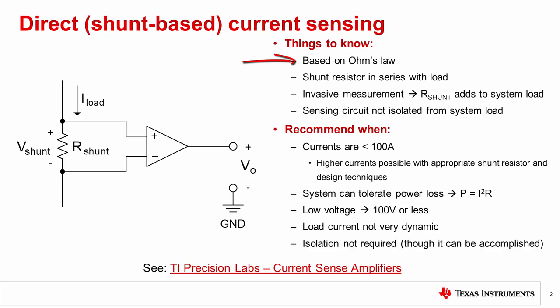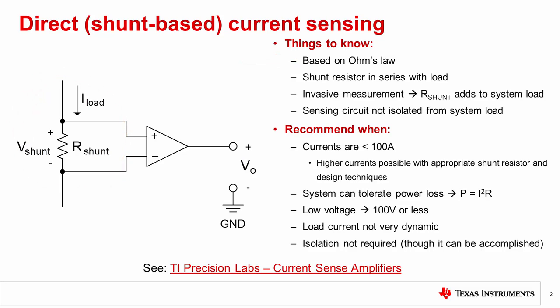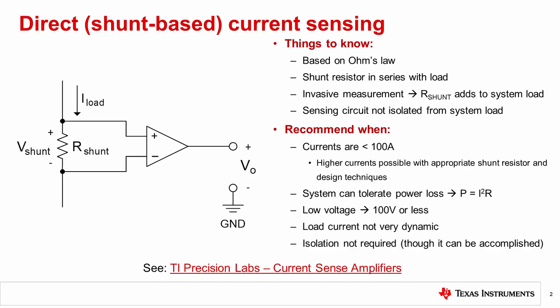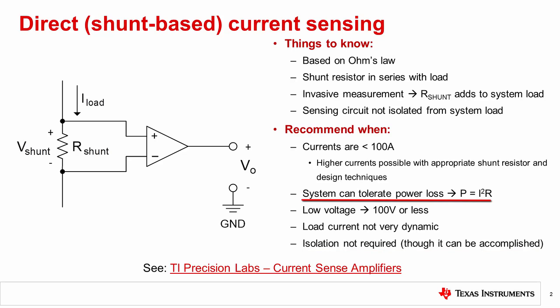Direct or shunt-based current sensing is based on Ohm's Law. By placing a shunt resistor in series with the system load, a voltage is generated across the shunt resistor that is proportional to the system load current. The voltage across the shunt can be measured by differential amplifiers, such as current sense amplifiers, operational amplifiers, difference amplifiers, or instrumentation amplifiers. This method is an invasive measurement of the current, since the shunt resistor and sensing circuitry are electrically connected to the monitored system. Therefore, direct sensing typically is used when galvanic isolation is not required, although isolated devices are available. The shunt resistor also dissipates power, which may not be desirable.